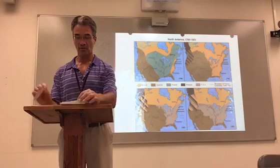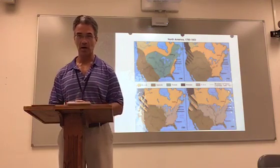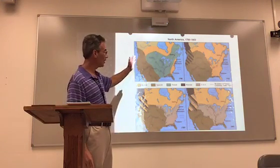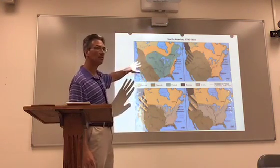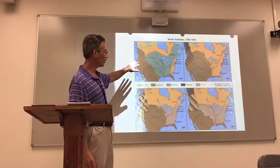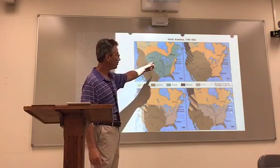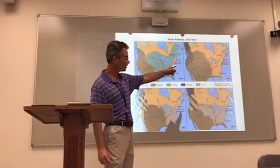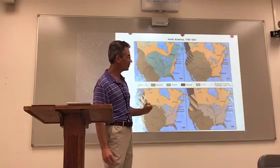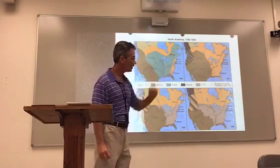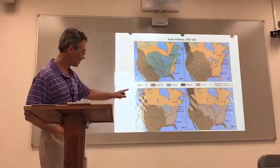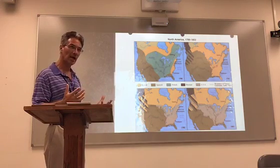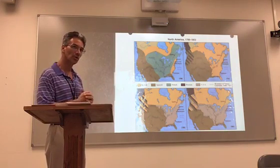I'd like to direct you to the maps behind me — there are four of them. The first one is from the year 1700 and basically shows the three main colonizers of Europe in North America: the Spanish in brown, the French in green, and the English in orange. Moving up to 1763, the French have basically been squeezed out, but you still have the Spanish and the English. The next map is what's going to count as far as when the Constitution was first developed.